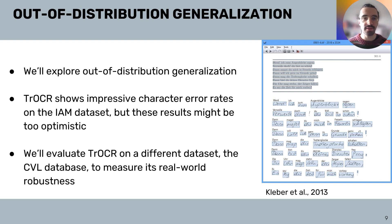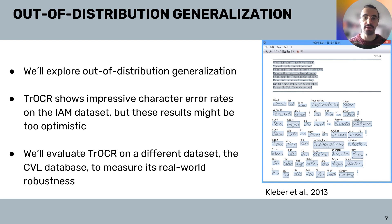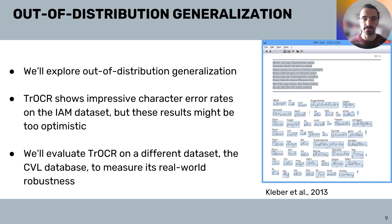To address this, we'll evaluate Trocker on a different dataset, the CVL database, to measure its real-world robustness. By comparing character error rates, we'll understand how well Trocker generalizes to new, unseen data.